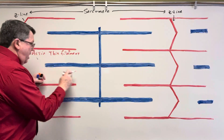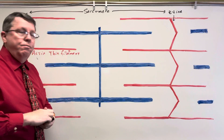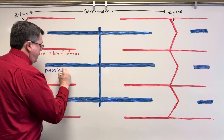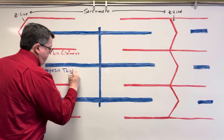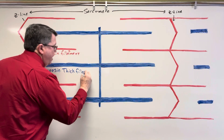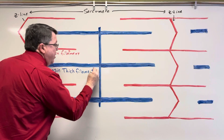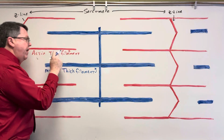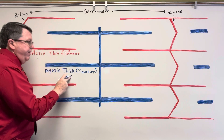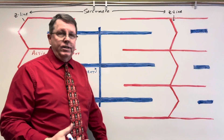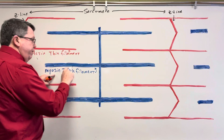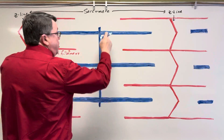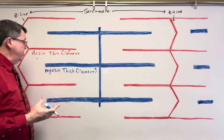This thick line here is going to be called myosin — myosin is my thick filament. The way I remember these two is that actin likes to act thin. If I take my thin filament and my thick filament, together we call those myofilaments. Everywhere you see the blue lines is the myosin.